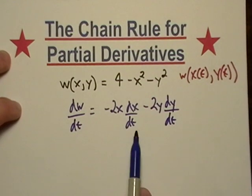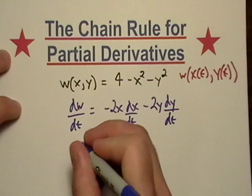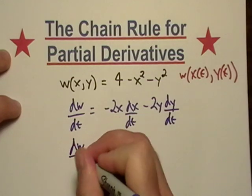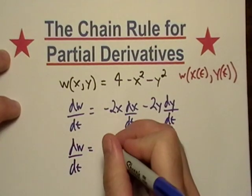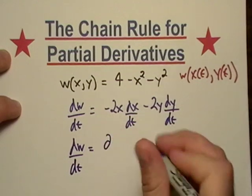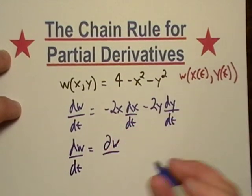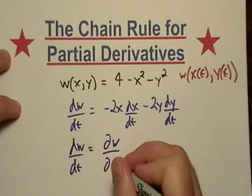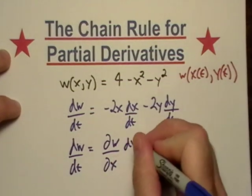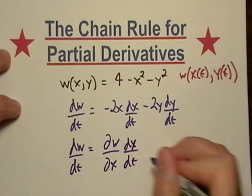So basically, what did we do? We took the partial with respect to x—and I guess we'll put a w there—times the regular derivative with respect to t.